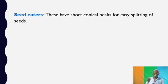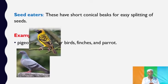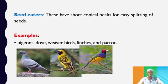Let's talk about the seed eaters. Seed eaters have short conical beaks for easy splitting of seeds. Examples of perching birds that eat seeds include the pigeons, the dove, the weaver birds, the finches, and the parrots.